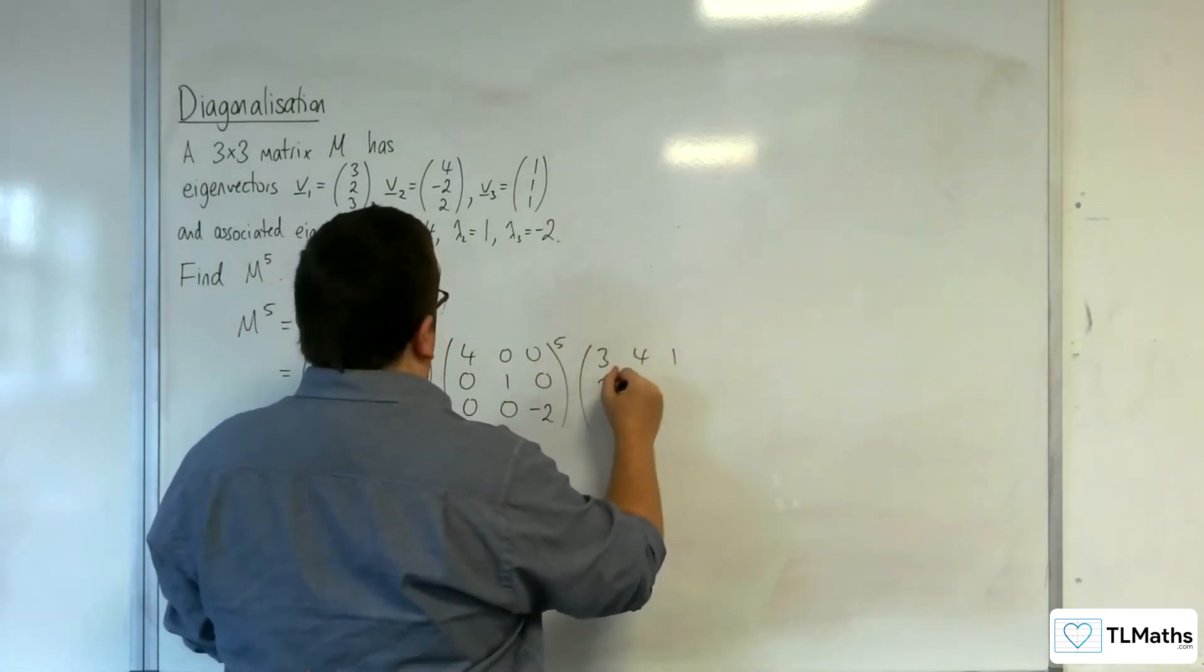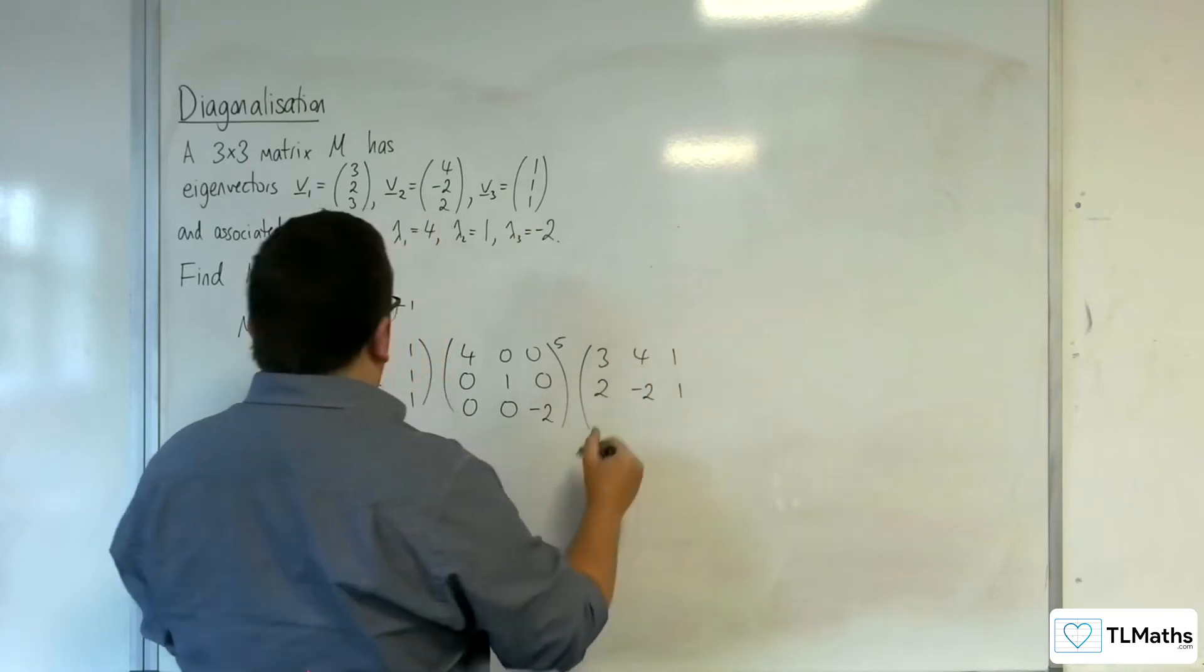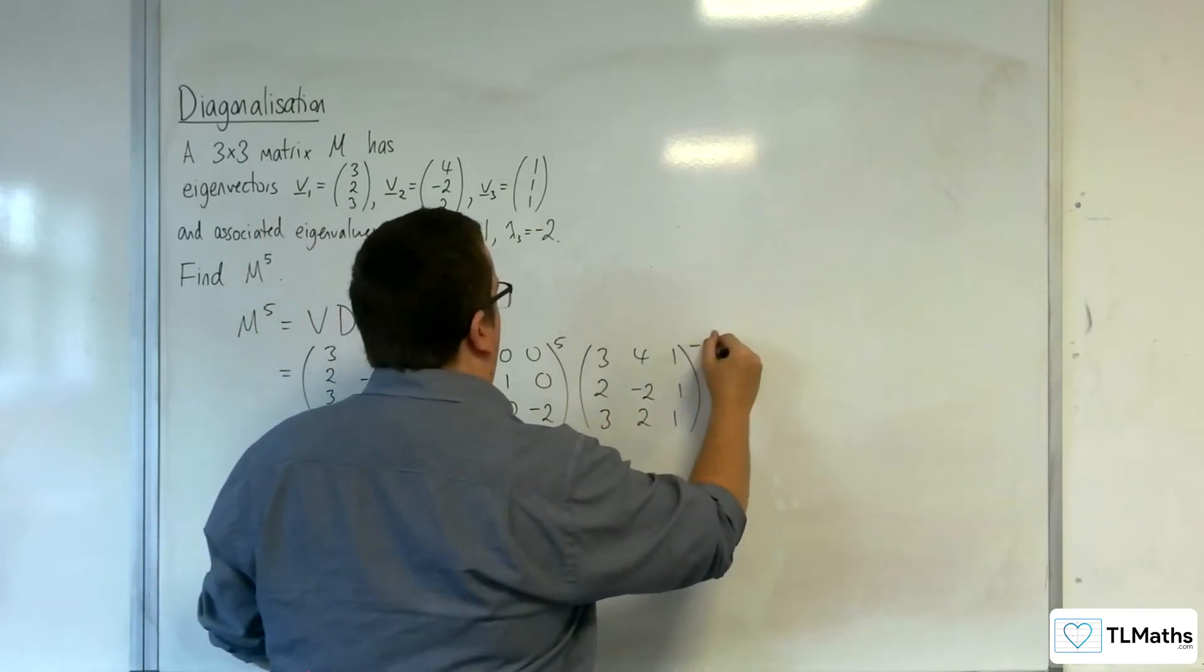times 3, 4, 1; 2, minus 2, 1; 3, 2, 1 to the minus 1.